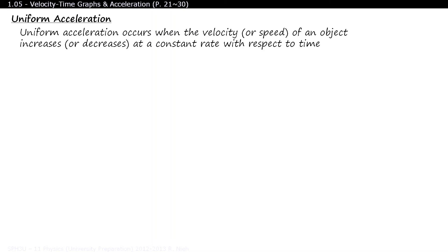Uniform acceleration occurs when the velocity of the object increases or decreases at a constant rate with respect to time. Here's our first word problem. Determine the acceleration of a Civic that uniformly accelerates from rest to 28 meters per second in 14 seconds. There are three givens in this statement. Can you see all three?